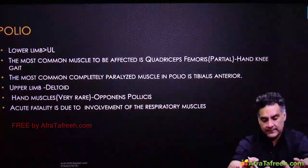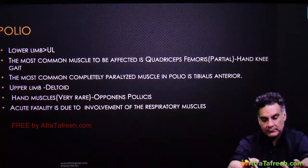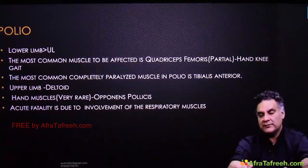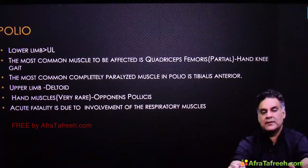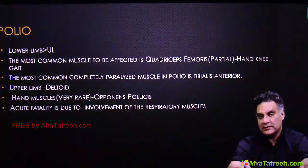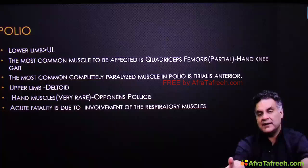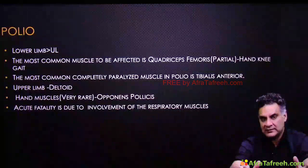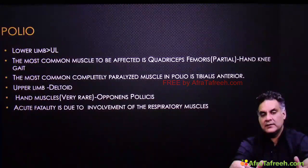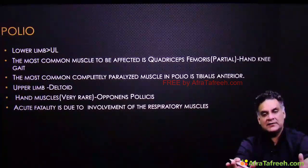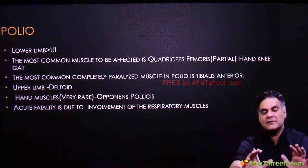Polio affects the lower limb more than the upper limb. The most commonly affected muscle is quadriceps, which is partially affected — the child will support his thigh or knee to walk. The completely paralyzed muscle is tibialis anterior. The upper limb is less affected; if involved, it typically affects deltoid. Hand involvement with opponens is extremely rare. Fatality is due to involvement of the respiratory muscles.